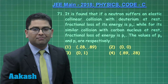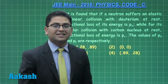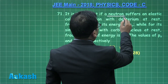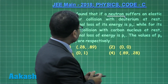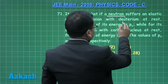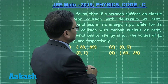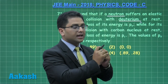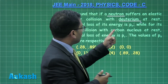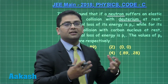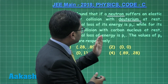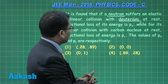Question 71, drawn from mechanics, involves a collision scenario. A neutron suffers an elastic collinear (1D) collision with deuterium — the neutron is the striker and deuterium is the target at rest. The fractional loss of kinetic energy of the neutron in this case is p_d. In the second case, a similar collision with a carbon nucleus at rest gives a fractional loss p_c.